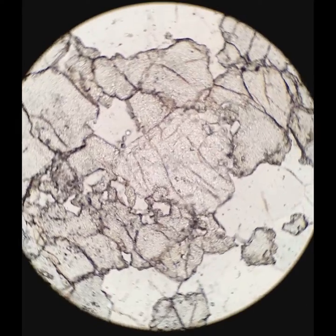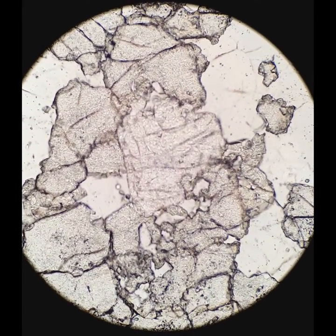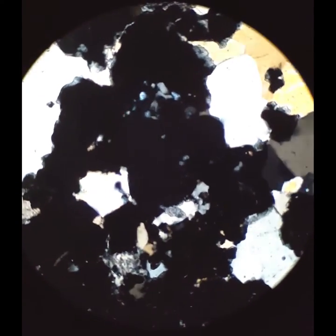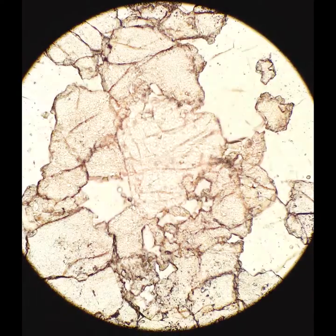They look very similar until you cross the polars, and then what you see is the garnet goes black, but the apatite has this very weak gray interference colors. And so that's the characteristic. It kind of looks like garnet, but when you cross the polars, it has gray pleochroism. It actually has lower relief also.